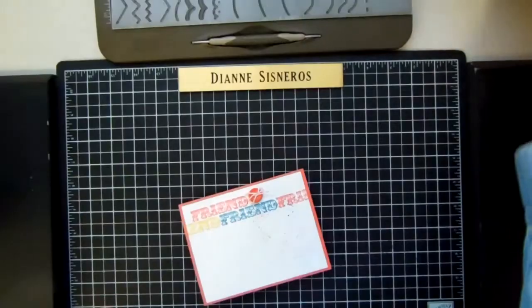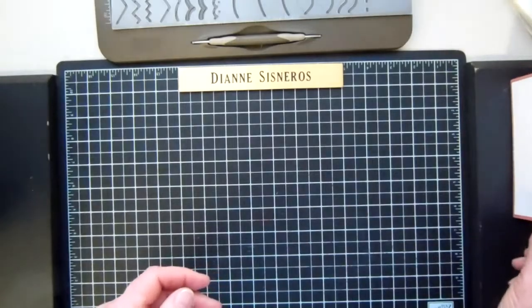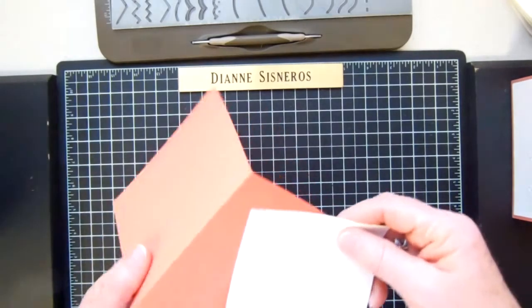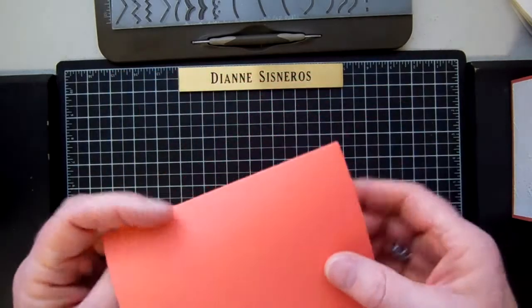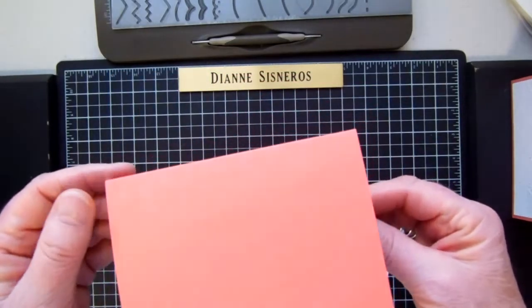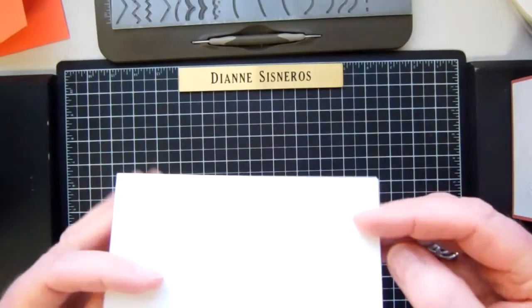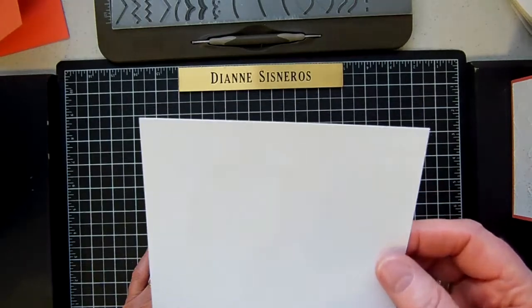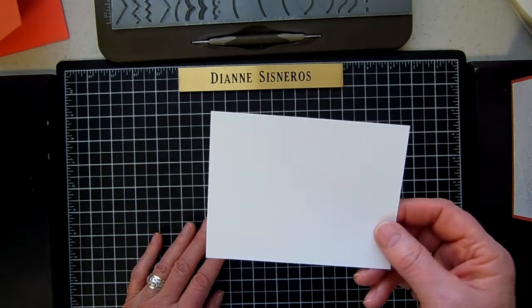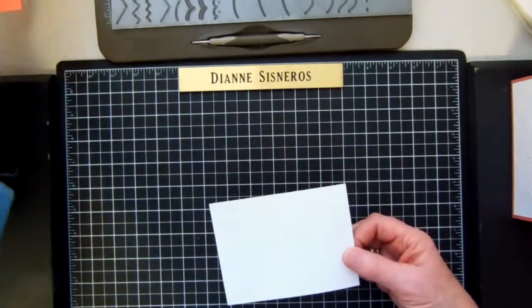And I haven't used it yet, so I thought this would be a great card to do. So I'm going to take a Calypso Coral card base, 8 1/2 x 5 1/2. And then the piece of paper that I'm going to be working with is Whisper White. And this is 4 x 5 1/2, which will fit perfectly on the front.